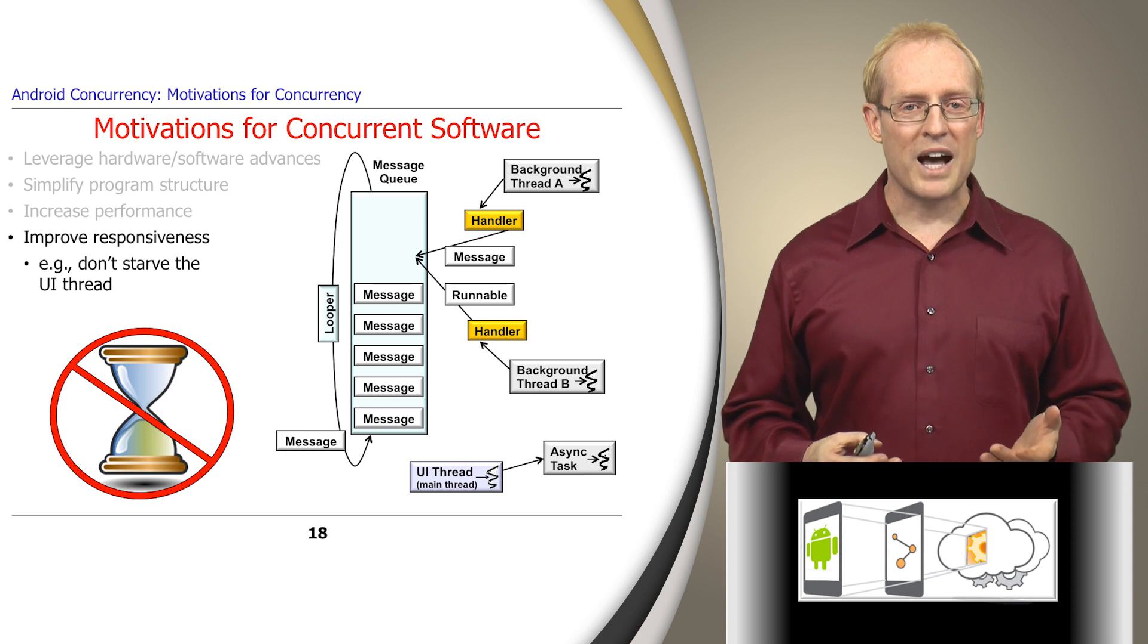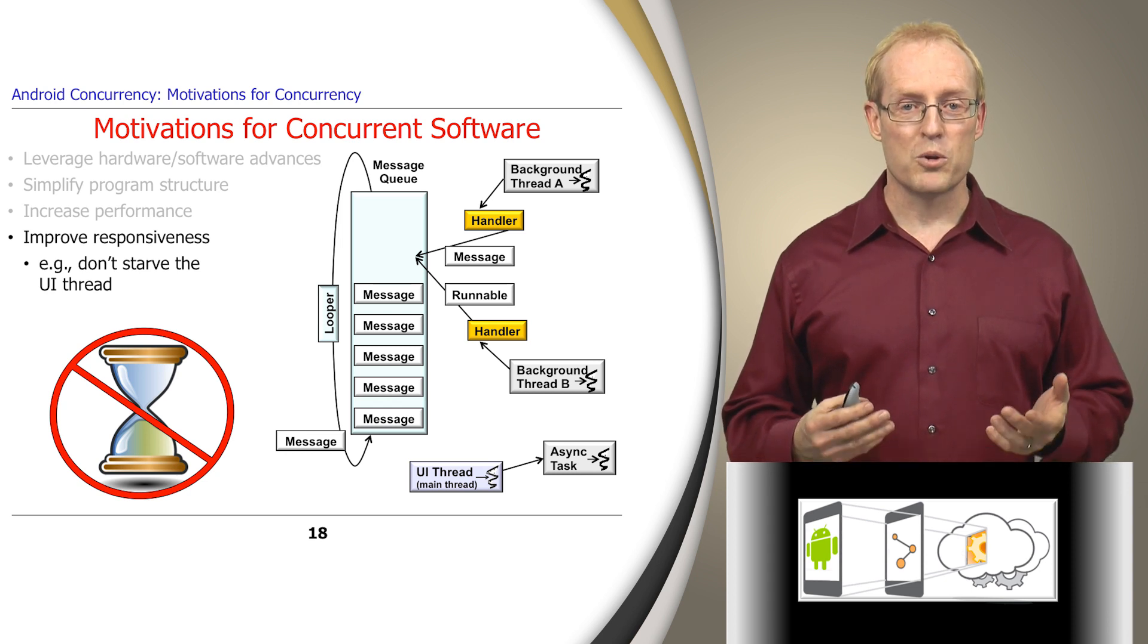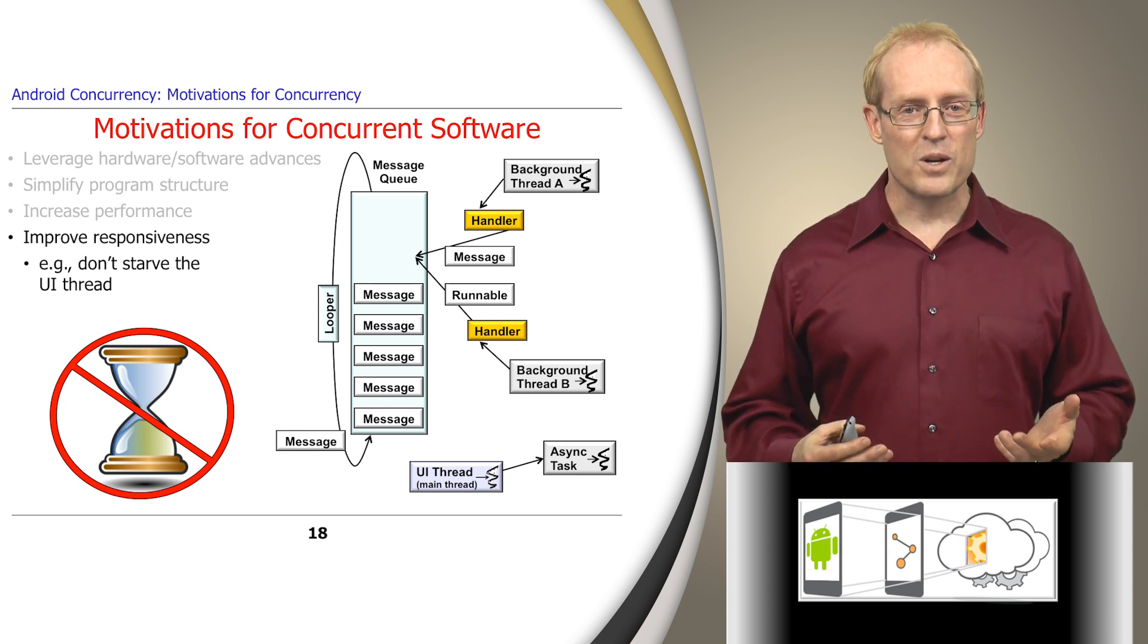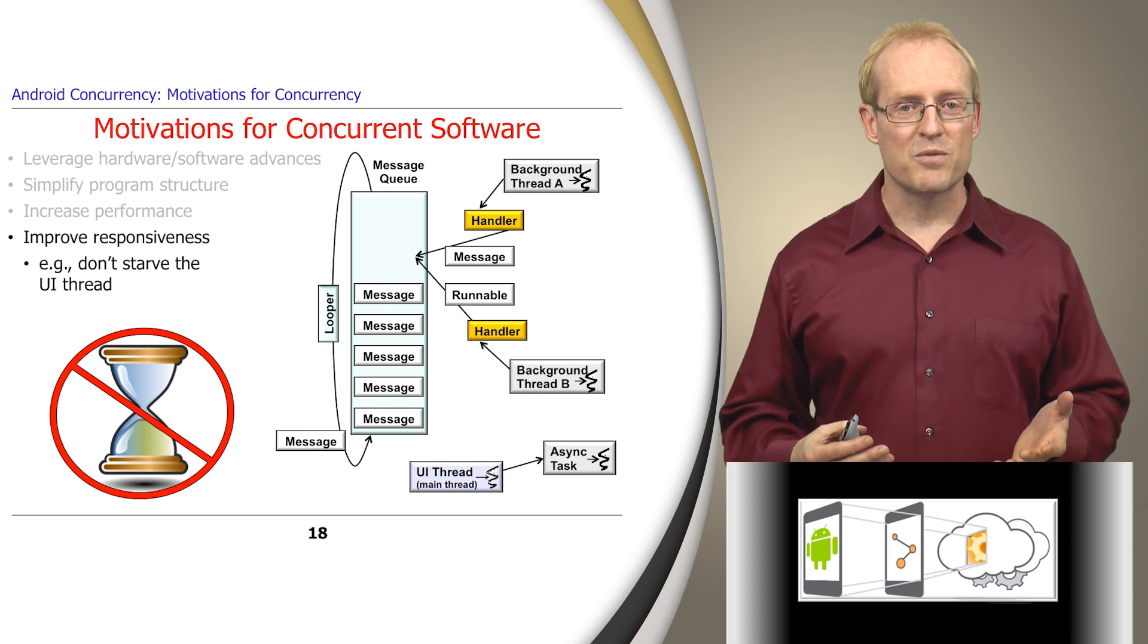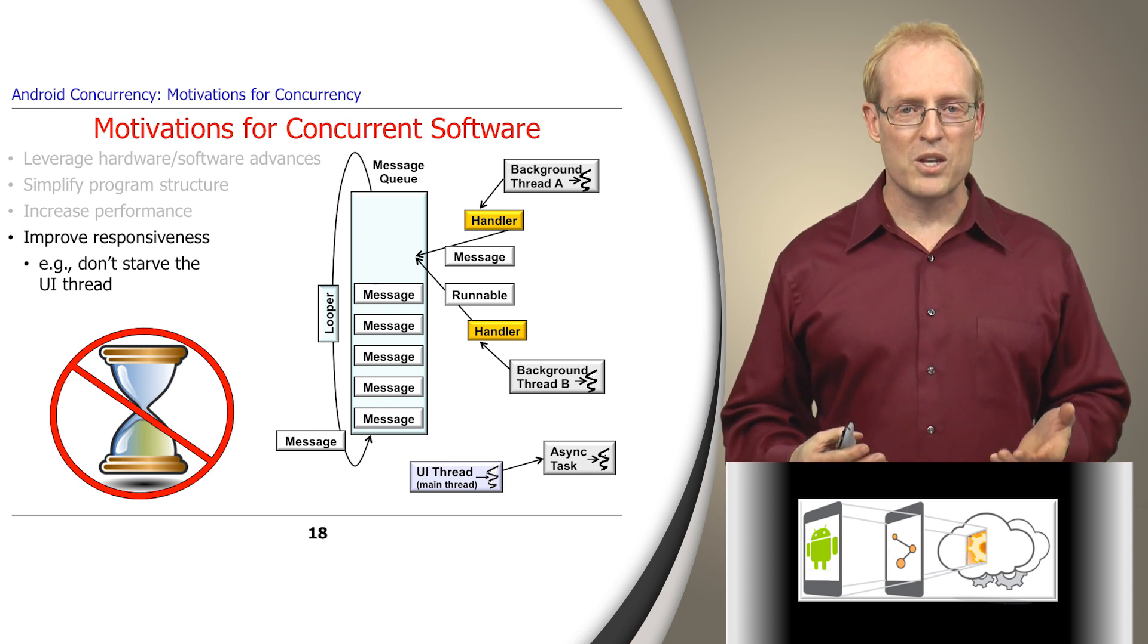Concurrency can even be applied on a single-core device to improve perceived response time. For example, an Android user interface thread can interact responsively to gestures and input from a user,